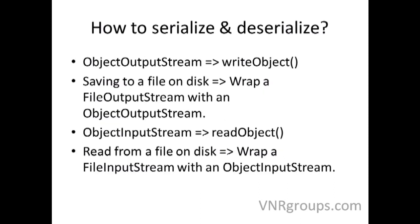So how do you serialize and deserialize? If you want to serialize to a file, you have to use a class called ObjectOutputStream. The OutputStream is an abstract class which writes bytes, and here you want to write objects as bytes, so you use ObjectOutputStream. You have to create a FileOutputStream and then wrap it with an ObjectOutputStream, so the ObjectOutputStream knows it is finally going to a file. Similarly, when you read from a file, you have to use ObjectInputStream and call the readObject method, wrapping a FileInputStream with an ObjectInputStream.